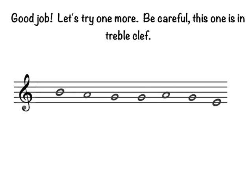Let's try one more. Be careful — this one is in the treble clef. Remember, the lines in the treble clef are Every Good Boy Deserves Fudge. Every Good Boy — B. Space notes spell FACE: F-A. It's on the line again: Every Good — G.